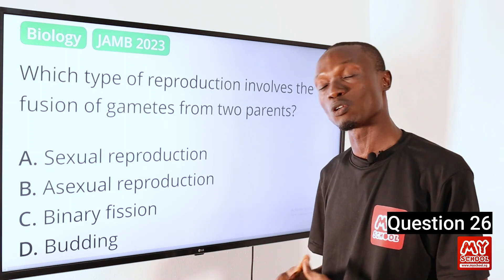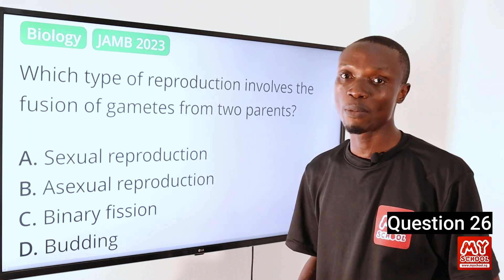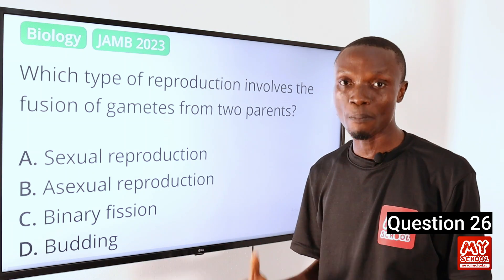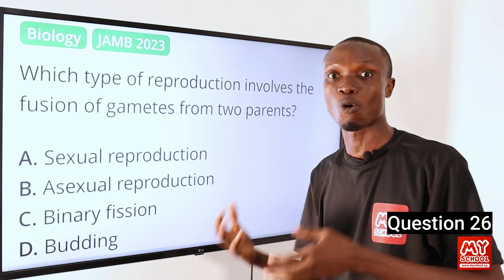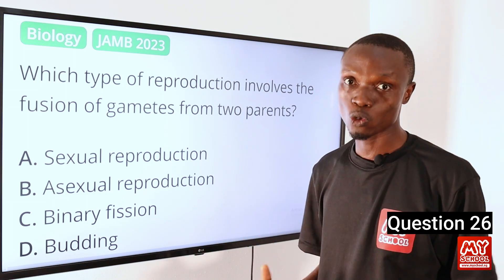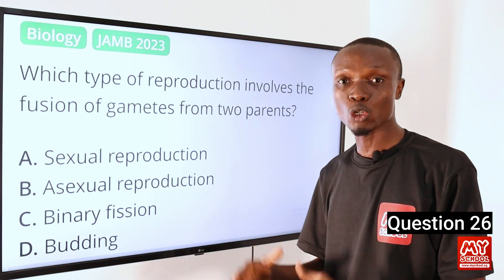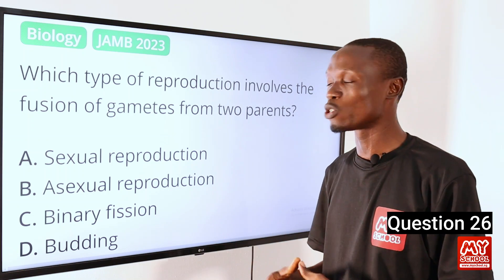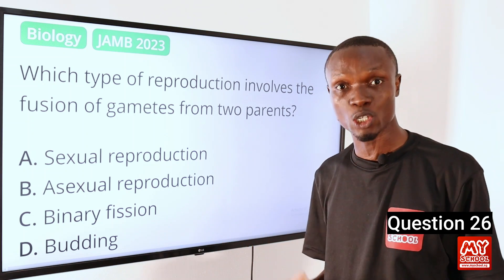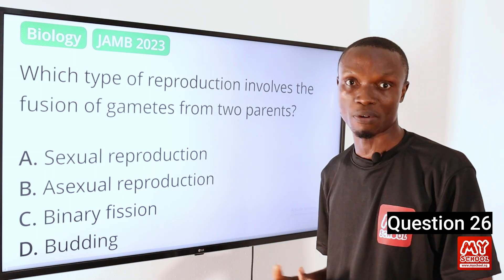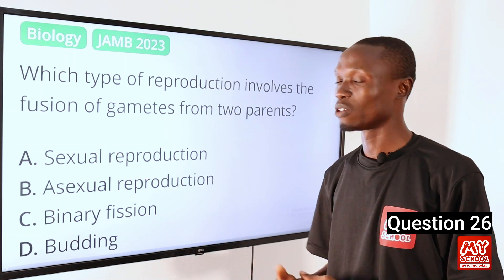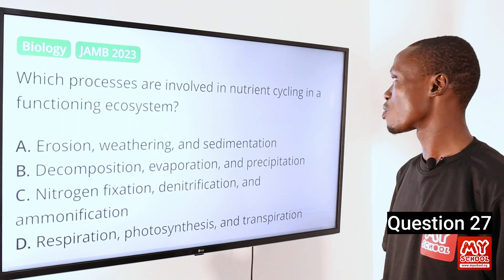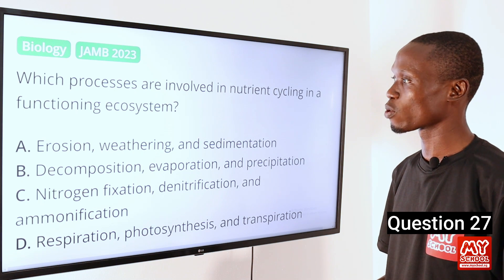Sexual reproduction involves the fusion of gametes from two parents. During this process, specialized cells called gametes — sperm and egg from male and female — are produced through meiosis. The fusion of these gametes leads to the formation of a zygote which develops into a new individual with a combination of genetic traits from both parents. So option A is the correct option.